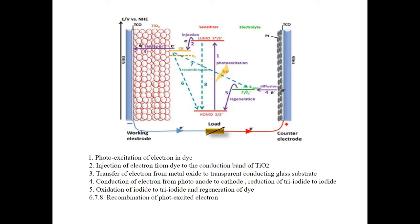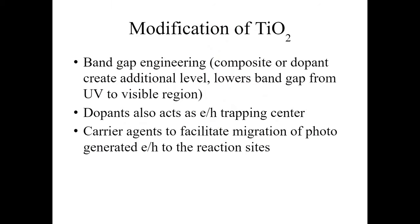The semiconductor passes the electron to the working electrode and continues the circuit. The drawback of this semiconductor is that photons face high recombination. To address this, we do modification of titanium dioxide by engineering the bandgap through composite or doping, which creates additional energy levels, lowering the bandgap from the UV to the visible region. This composite also acts as an electron-hole trapping center and carrier agent, facilitating transport of photo-generated electron-holes to the reaction site.